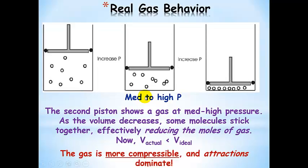The picture starts to change when we decrease the volume — we increase the pressure to medium to high pressure, squeezing those molecules together. As the volume decreases, some molecules are going to stick together, which effectively reduces the moles of gas. Now the actual volume taken up by those gas molecules is lower than we would get if we used the ideal gas law. In this case, the gas is more compressible and attractions dominate — this is where Z would be less than 1.